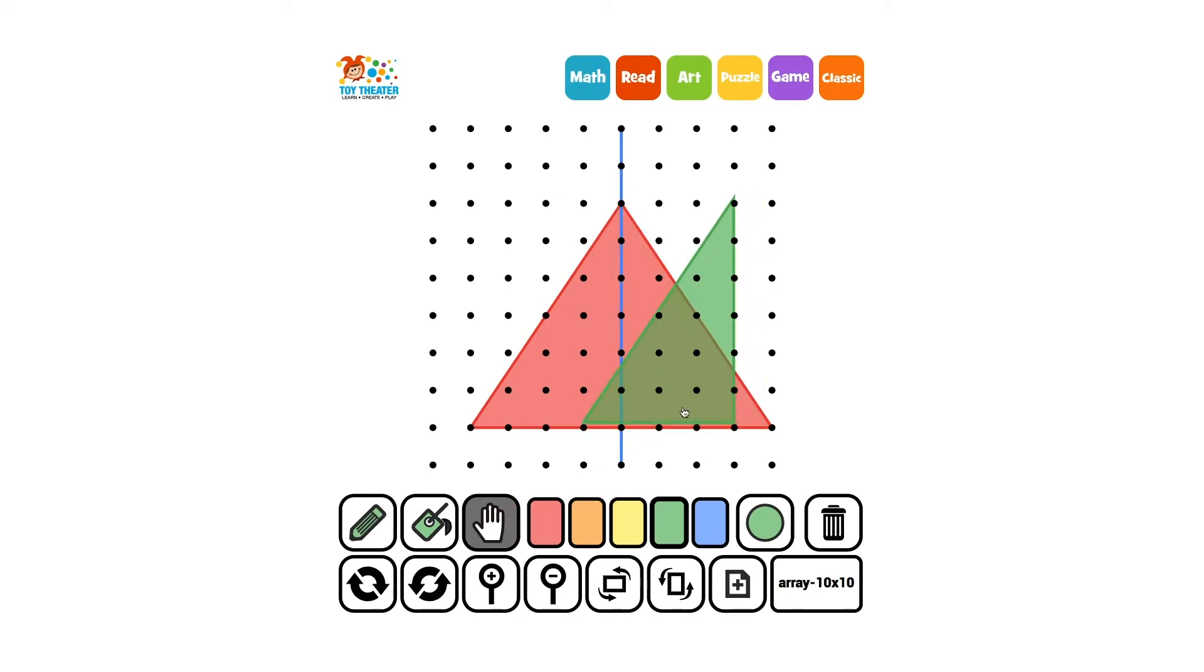Now let's flip it and see if it matches the other side. It does! So this is a line of symmetry on the triangle. And because this triangle has a line of symmetry, it is symmetrical.